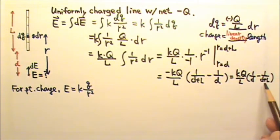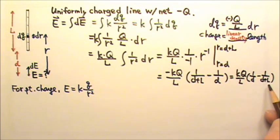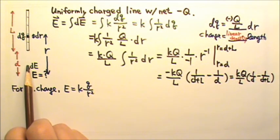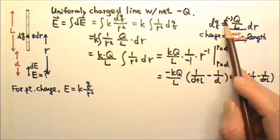Since d plus L is bigger than d, this is a positive number. So this is the magnitude of the electric field. And the electric field over here goes up that way into the negative charge. Sometimes a problem like this may give us the linear charge density lambda instead of the total charge negative q.